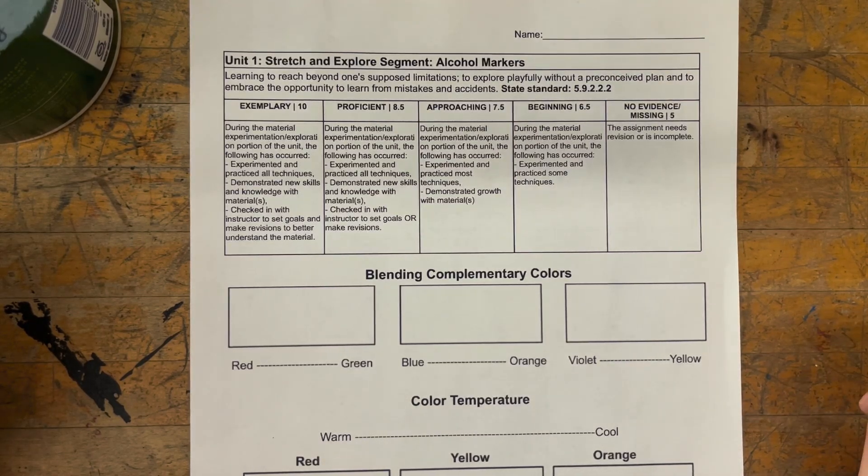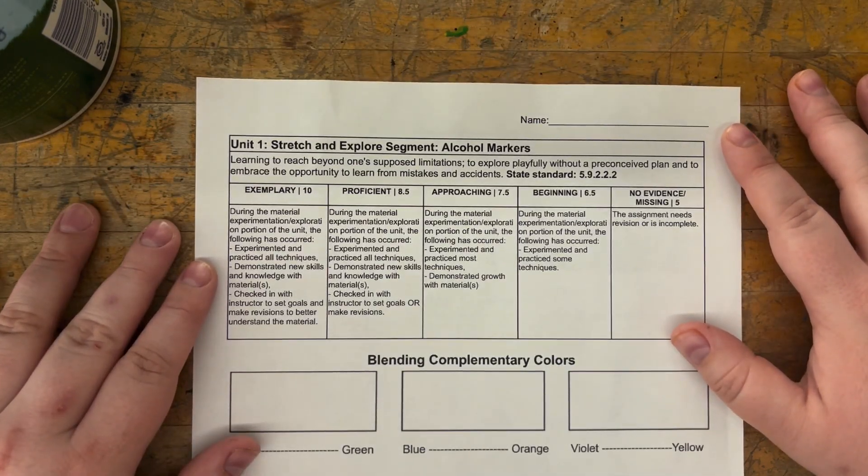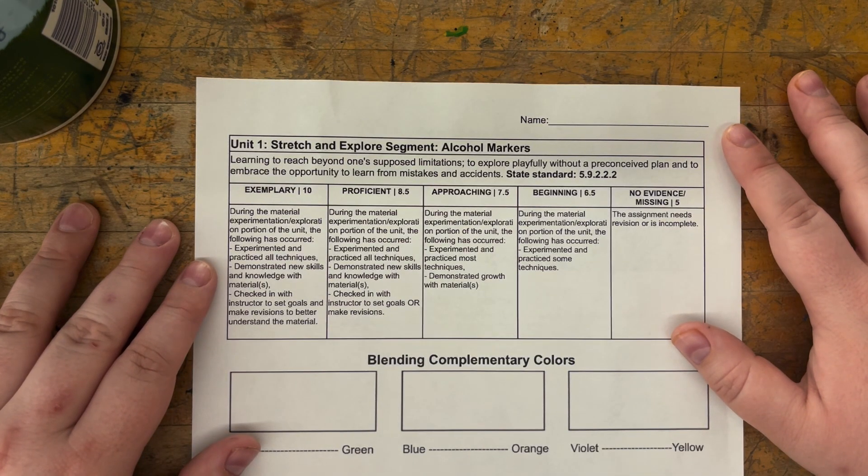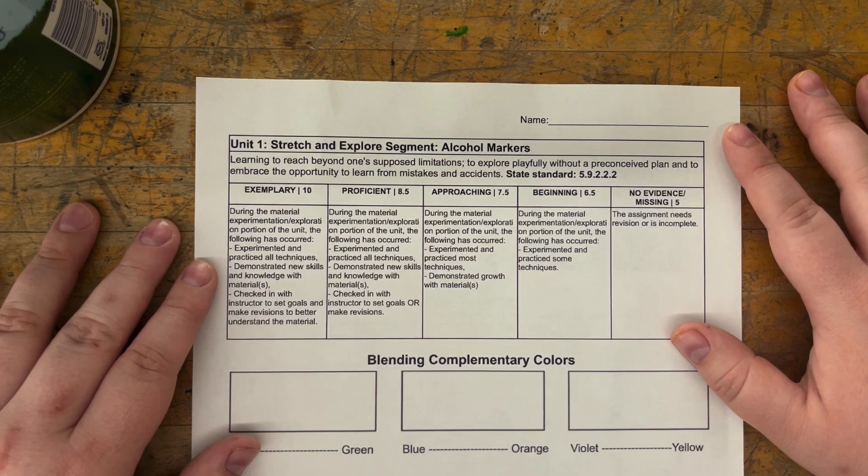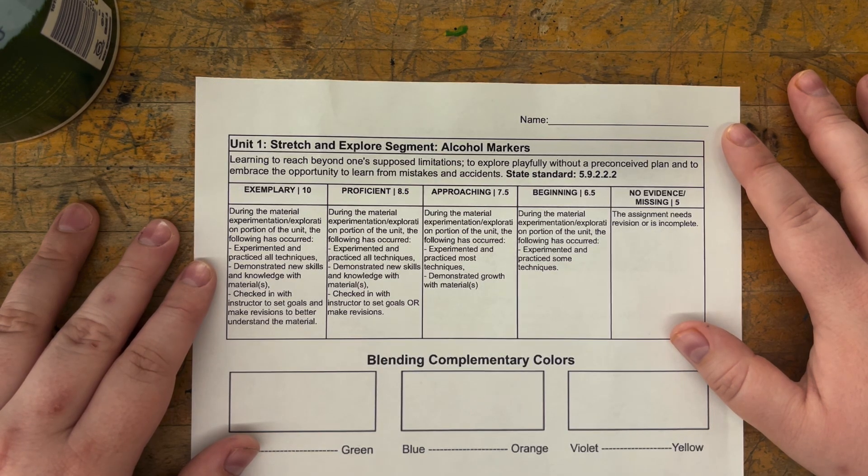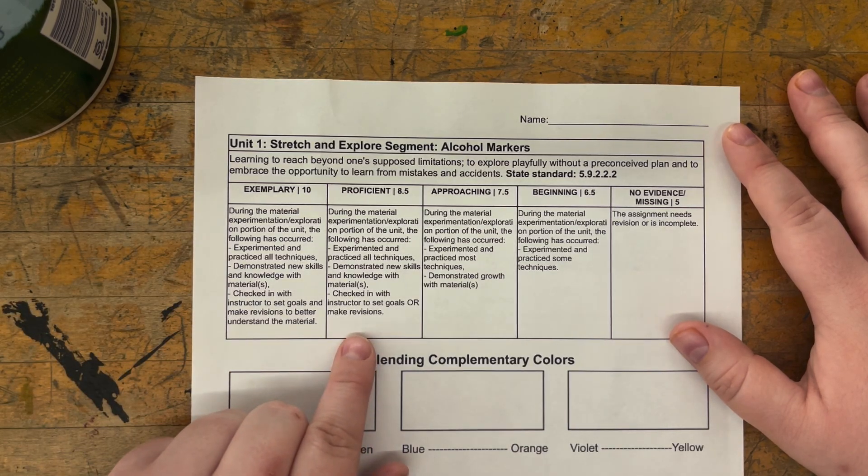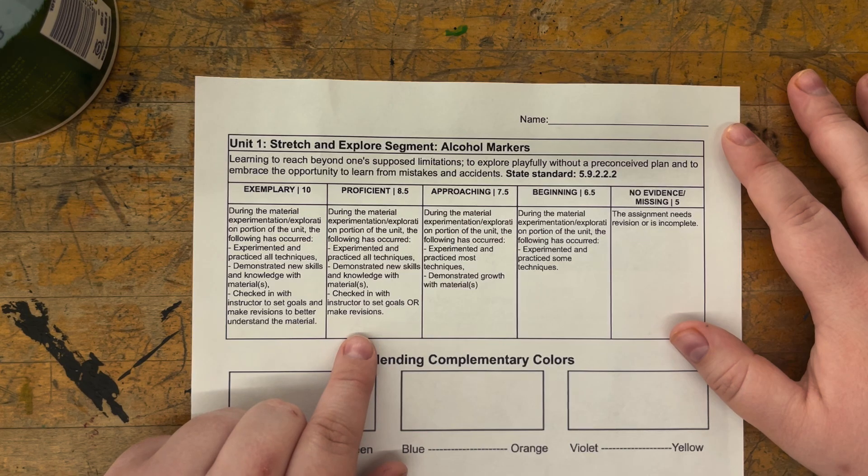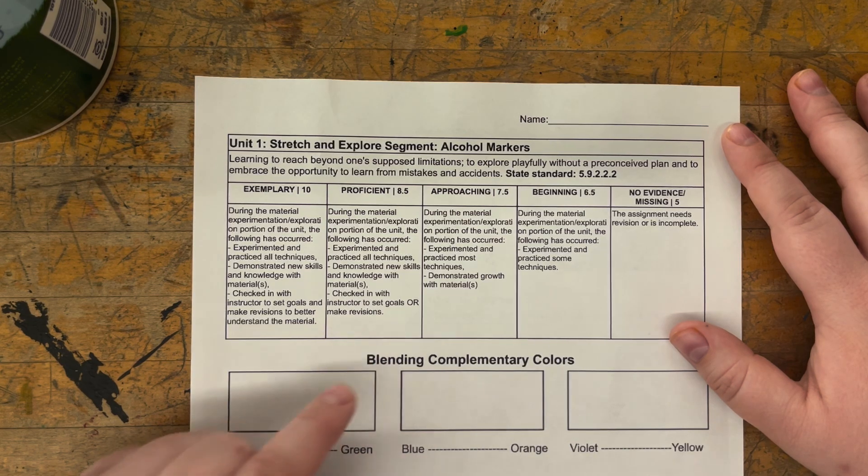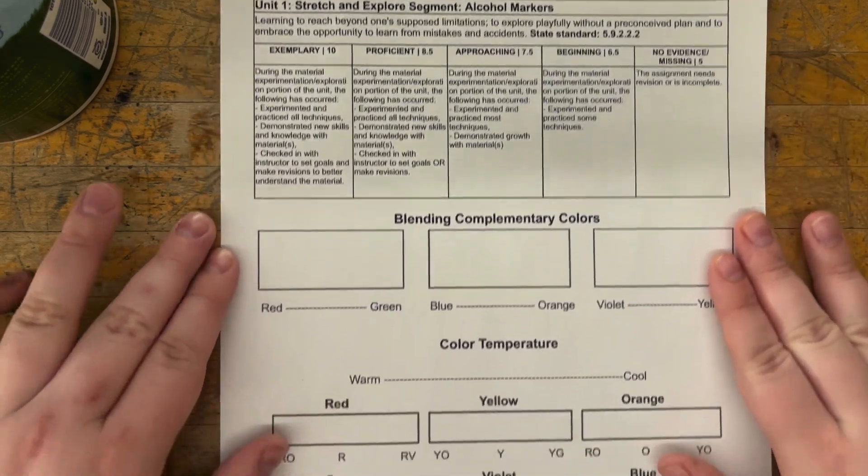For our Unit 1 Stretch and Explore segment, we're going to be looking at colored pencil. For the assessment, I'm essentially looking that you've experimented with colored pencil, that you've shown growth with the material, and that you've taken the opportunity to check in and make any revisions, looking at taking what you've displayed and then looking at a little bit of improvement.